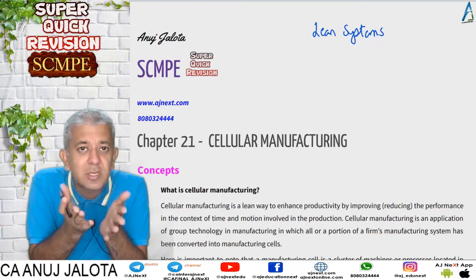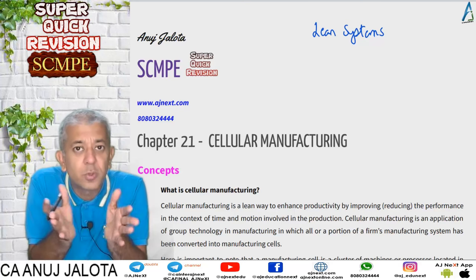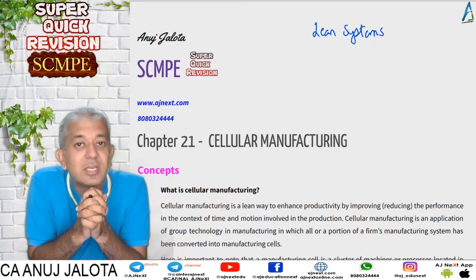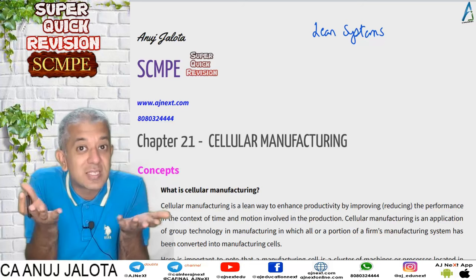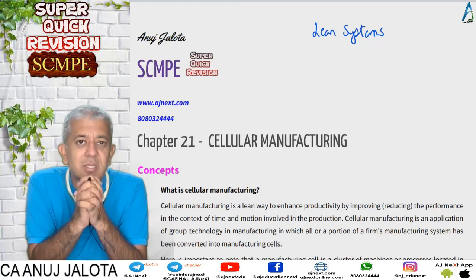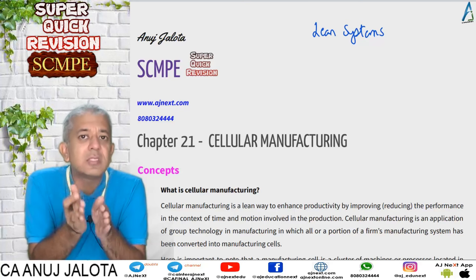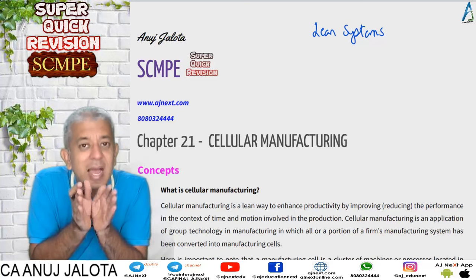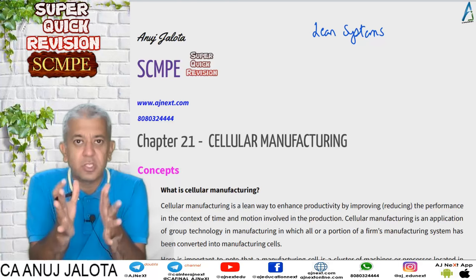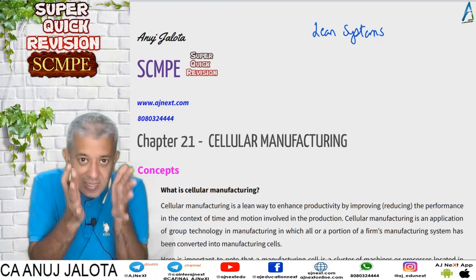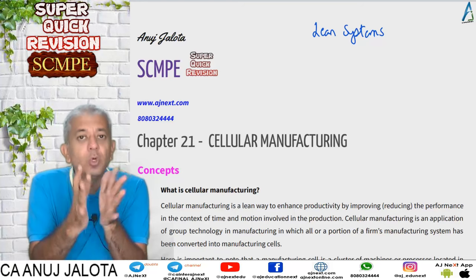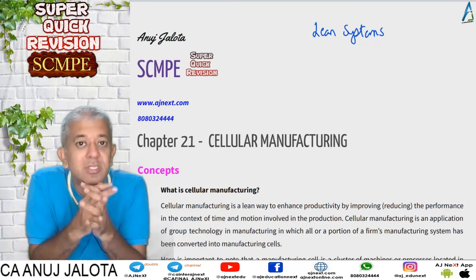Our previous chapter on PPM basically told one thing: maintain the machines in such a way so that there are no unscheduled stops, no wastage in the form of time. Our next chapter, just-in-time system, focuses on ensuring there is no wastage in terms of excess inventory. This chapter is there for one thing only — there should not be any unnecessary movement of materials as well as workers in the factory. We try to organize the factory so that movement of workers is as less as possible, staff is used as efficiently as possible, and goods are produced the fastest. That is the cellular manufacturing objective.